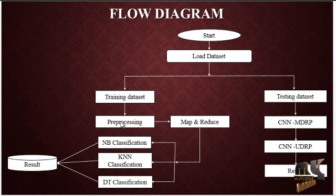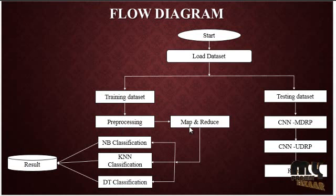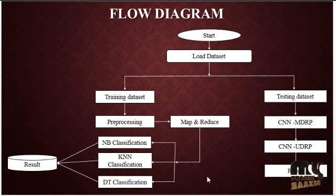After loading the dataset, we perform pre-processing, where we delete unwanted elements from the dataset. The next process is map and reduce: the dataset is uploaded onto the HDFS server, then mapped and reduced for efficient results. From there, three types of classification are applied: Naïve Bayes classification, KNN classification, and Decision Tree classification. In Naïve Bayes classification we find the probabilistic value.